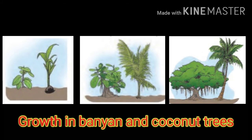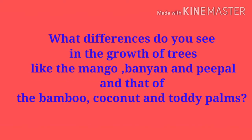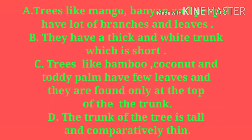In 5 to 6 years, these plants grow into adults and reproduce. The lifespan of these trees is 200 to 1000 years. Trees like mango, banyan and people have lots of branches and leaves, with a thick and wide trunk which is short. Trees like bamboo, coconut and toddy palm have few leaves and they are found only at the top of the trunk, and the trunk is tall and comparatively thin.